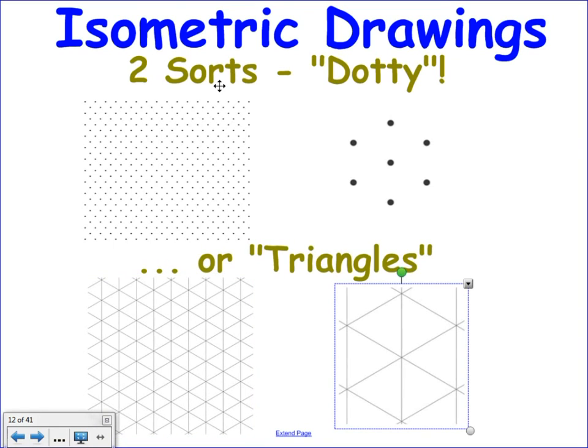And the other flavour is triangles. And all they've done here is they've joined the dots. So you need to be able to draw three-dimensional objects onto either dots or triangles. And these are called isometrics.